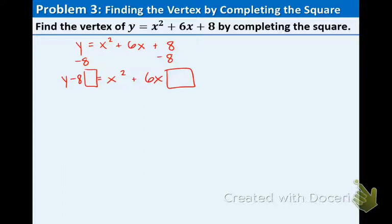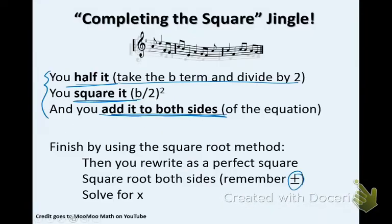You can see there is a blank space right here as well as right here. So now the way that you figure out what number goes in that spot, let's go back to the jingle I referenced in the previous video. Here's the jingle: you half it, take the b term and divide by 2, you square it, take that b value, divide by 2 and square it, and you add it to both sides of the equation.